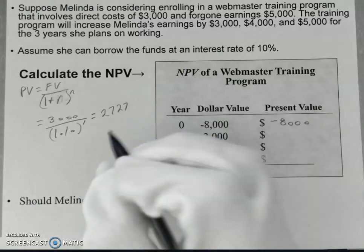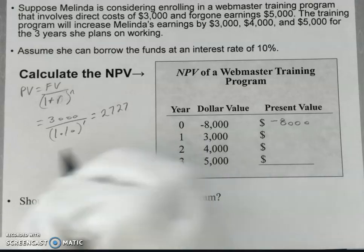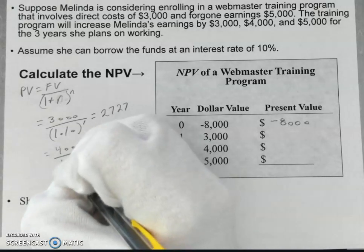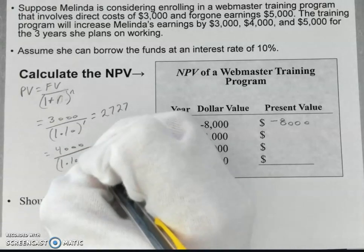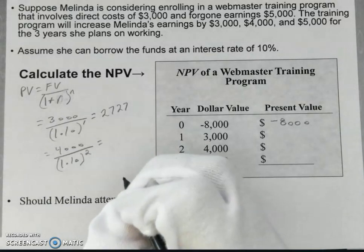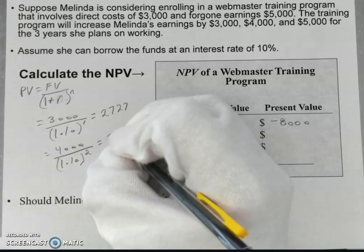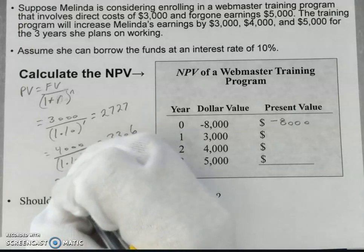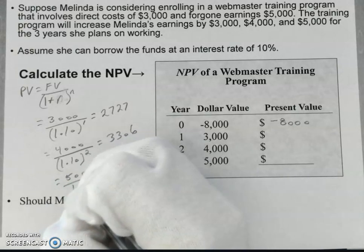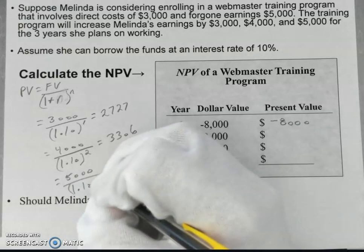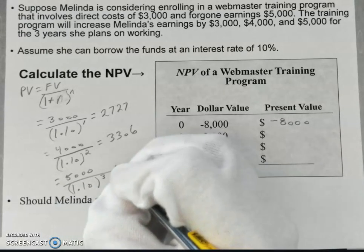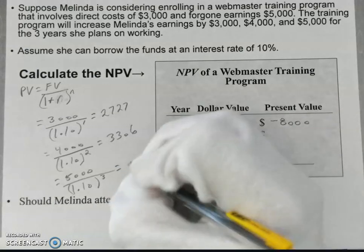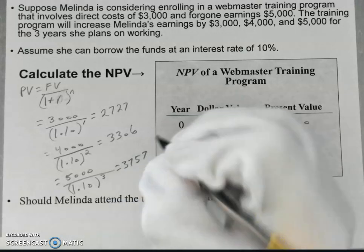Then for the second year, we're going to get 4,000 divided by 1.10 to the second power, and that should give us 3,306. And then finally, we have 5,000 divided by 1.10 to the third power, because it's coming in the third year, and that equals 3,757.